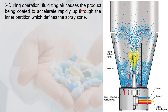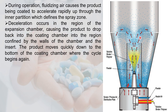During operation, the fluidizing air causes the product to accelerate rapidly up through the inner partition, which defines the spray zone. Deceleration then occurs in the expansion chamber, causing the product to drop back into the coating chamber confined by the walls and insert. The product moves down to the bottom of the coating chamber where the cycle begins again. Tablets accelerate up, pass through the spray zone, get coated, decelerate, and return — cycling until uniform coating is achieved.